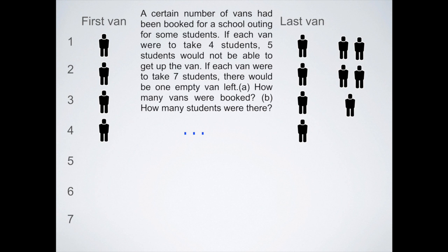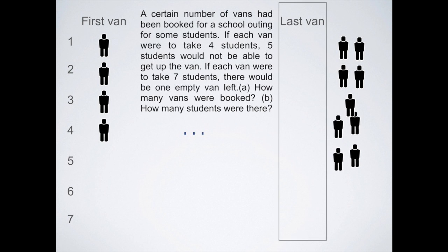In scenario two, we know that there would be one empty van. So let's take out this empty van. There would be four students. Let's take out these four students, and plus the five remaining students that could not get on the van in the first place. So with this, we are told that now the remaining van would be able to take seven students. That means three more than the first scenario.